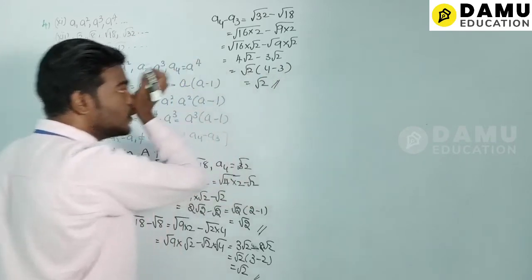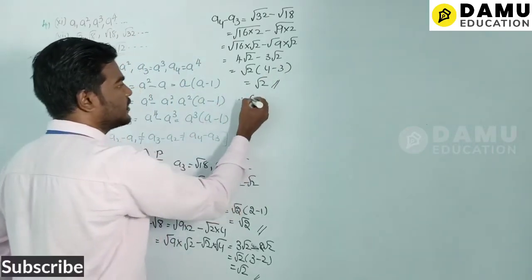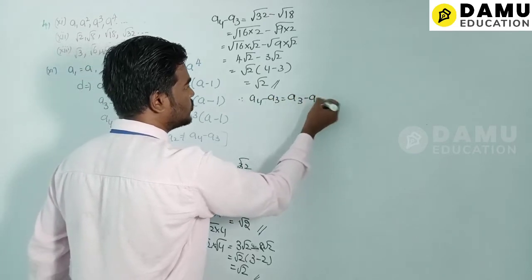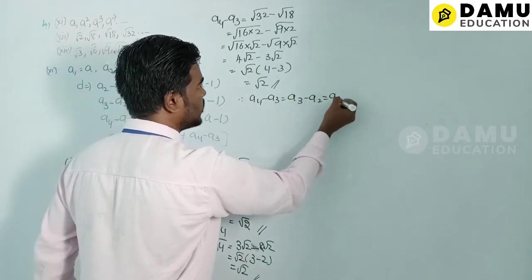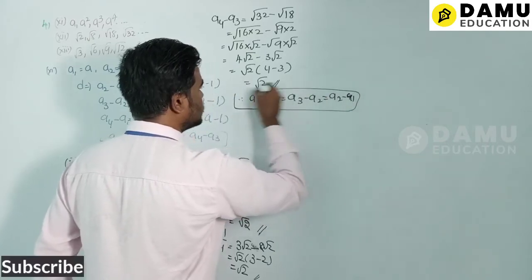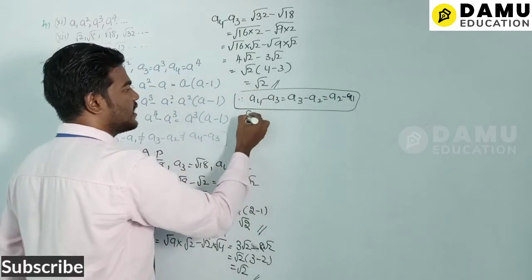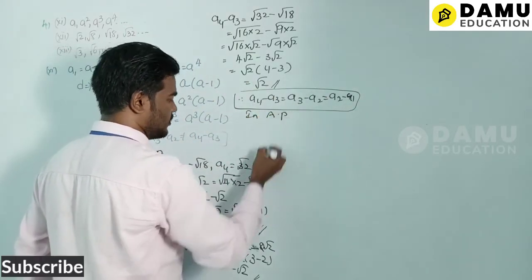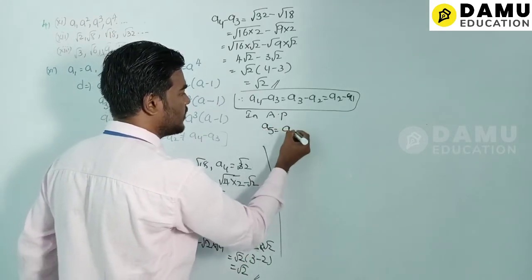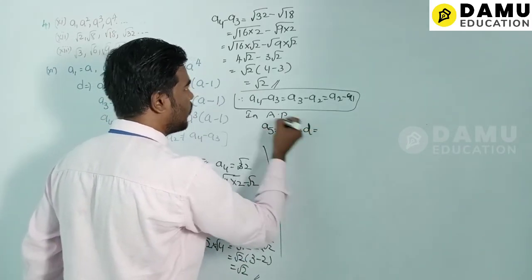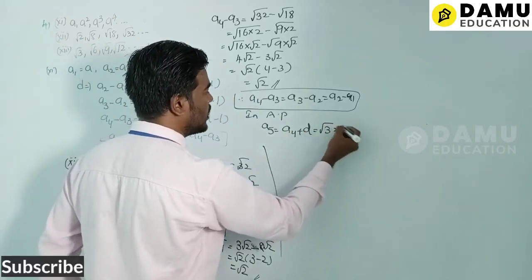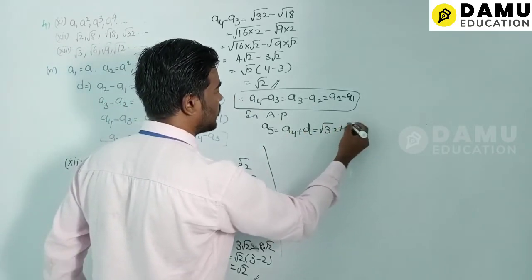Since a4 − a3 = a3 − a2 = a2 − a1 = √2, the series is in AP. Now a5 = a4 + d = √32 + √2.